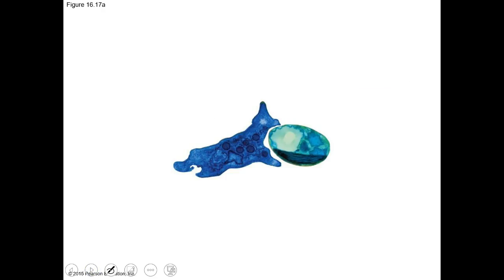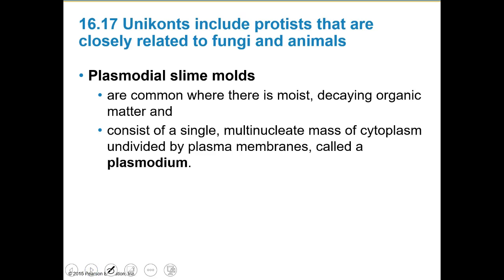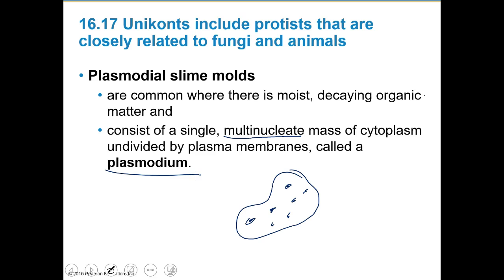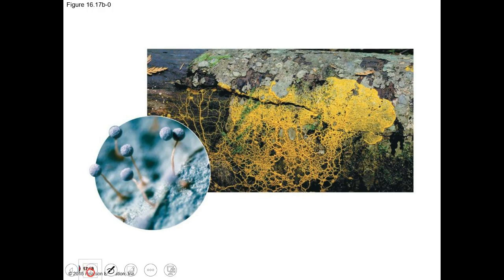Plasmodial slime molds are common where there's moist, decaying organic matter. They consist of a single multinucleate mass of cytoplasm undivided by plasma membranes, called a plasmodium — so you'll see one big grouping with multiple nuclei throughout. There's a great video online of a slime mold solving a maze — definitely worth Googling.